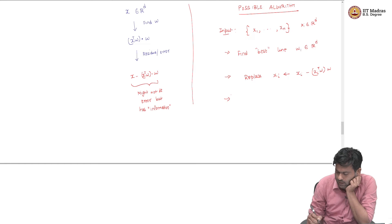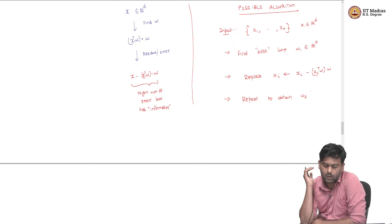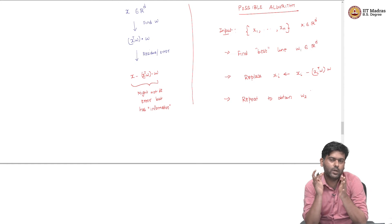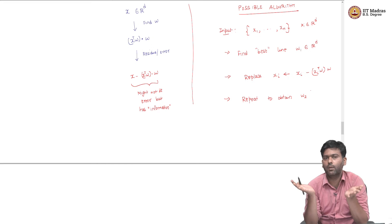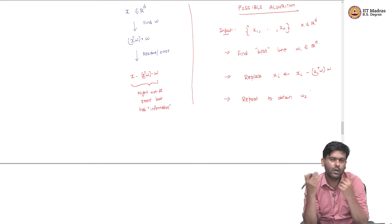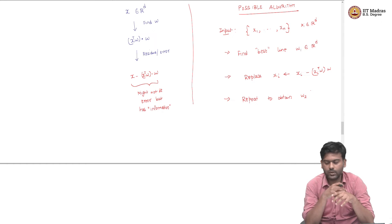I can repeat this procedure to obtain W2, a second-level direction. Why should I stop after getting W2? The idea is that the residue might contain information. Let us say we have 1000-dimensional data — we fit the best line W1, look at the residue, and if the residue also has information, we compute the residue data set, find a second line, and keep going. We can repeat up to the number of dimensions we have, creating more and more data sets from the residues.